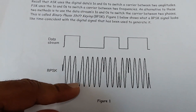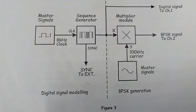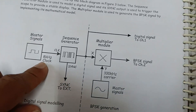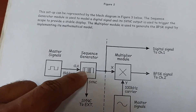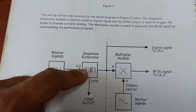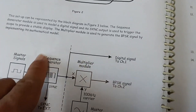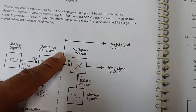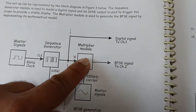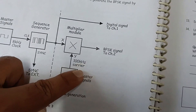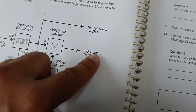For the block diagram, from the master signal we give an 8 kHz clock to the sequence generator. Using this clock, the sequence generator produces NRZ-L coding — NRZ means Non-Return-to-Zero line code. I have already explained the master signal and sequence generator for the EMONA kit. The binary signal is then modulated by multiplying with a 100 kHz cosine carrier signal, and the output of this multiplication is the BPSK modulated signal.